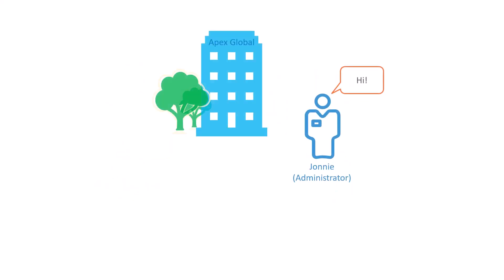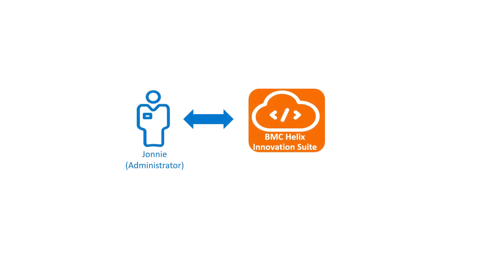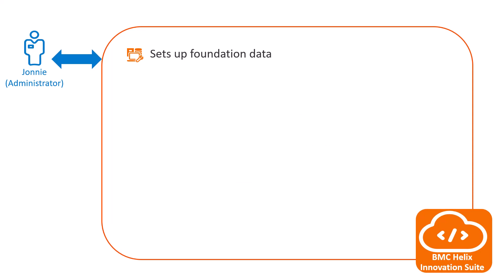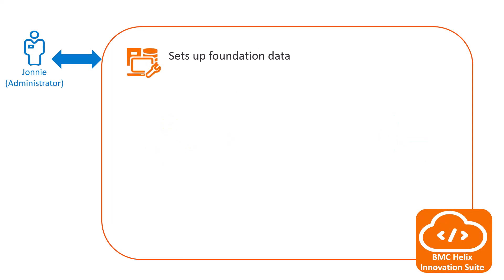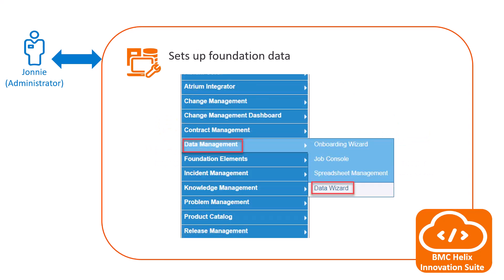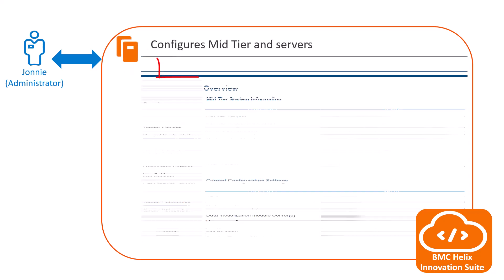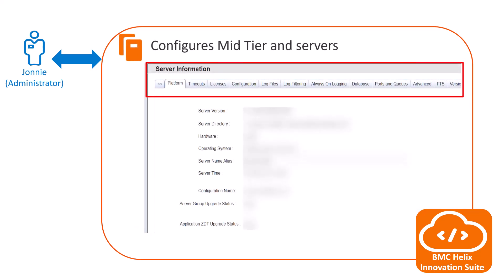Johnny, an administrator at Apex Global, logs into BMC Helix Innovation Suite. Johnny first sets up the foundation data, which is the source of information about the people in the company and their attributes. He loads the foundation data by using the data management console. He then configures the mid-tier and the AR system servers according to the licenses obtained by Apex Global, and sets the company's preferences for all the servers.